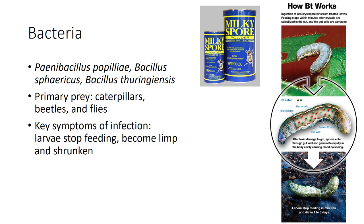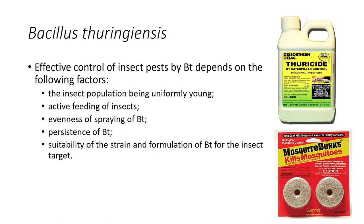Bt forms spores, each containing a protein inclusion called a crystal, which is the source of the toxins that cause most larval deaths. Bt is produced in large liquid fermenters and formulated in various ways, including as dusts and granules, that can be applied to plants as aqueous sprays. Currently, the most widely used isolate of Bt is available in numerous commercial products used to control Lepidoptera pests in forests and in vegetable and field crops.